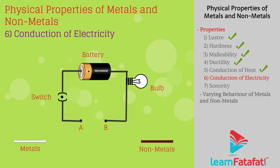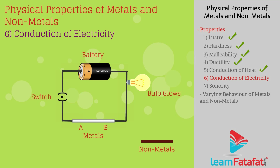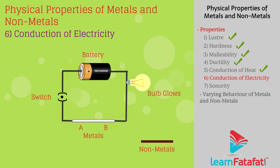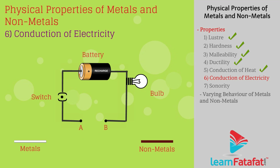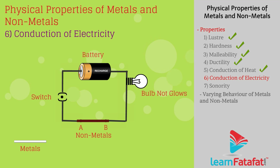Conduction of electricity: In this experiment, the metal is placed between the two terminals A and B. The bulb glows because the metal placed between terminals A and B provides a path for the current. Thus, metals are good conductors of electricity. However, when non-metals are placed between the terminals, the bulb does not glow. Thus, non-metals are generally insulators.